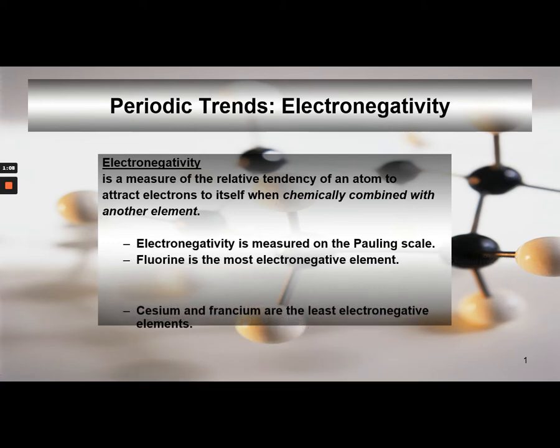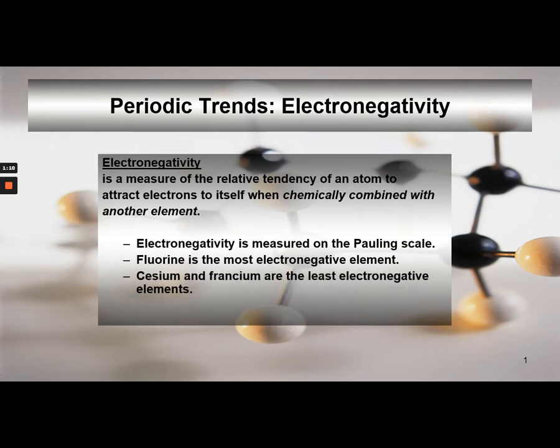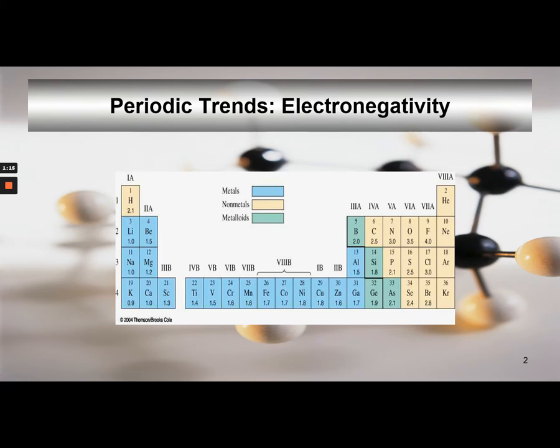Fluorine is the most electronegative element, and cesium and francium are the least electronegative elements. If we look at a small section of the periodic table and the electronegativity values, we see that hydrogen has a 2.1 value—these are unitless—whereas fluorine is 4.0.